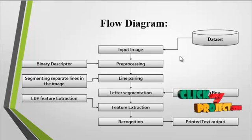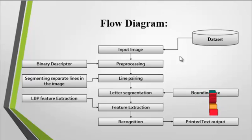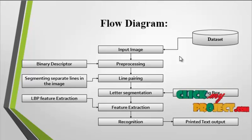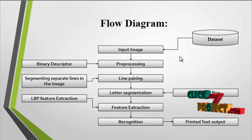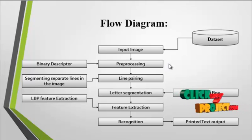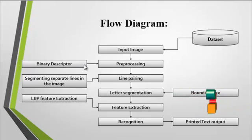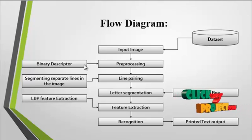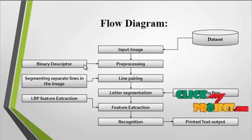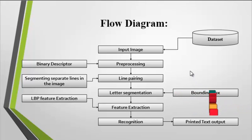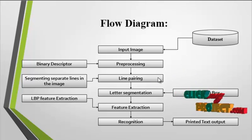At first, the input image is taken from the dataset. The dataset is a folder which consists of several images that are processed. After getting the input image from the dataset, the pre-processing is carried out. The pre-processing involves getting the binary descriptor, which has only two values: 0s and 1s. The 0 areas represent the black regions and the 1s represent the white regions. After the pre-processing, the line pairing is carried out.